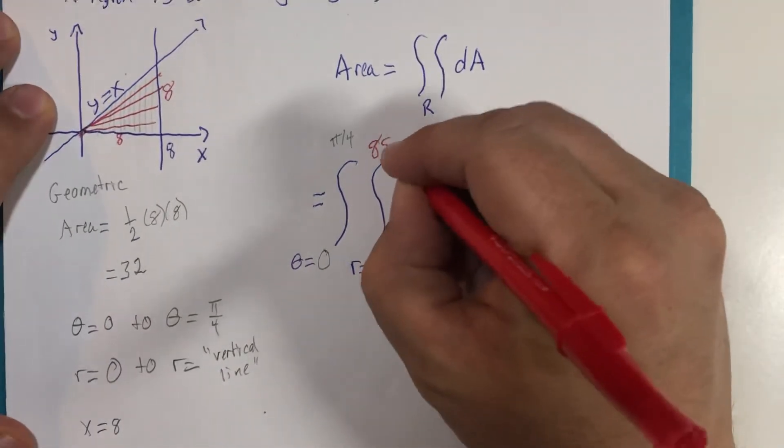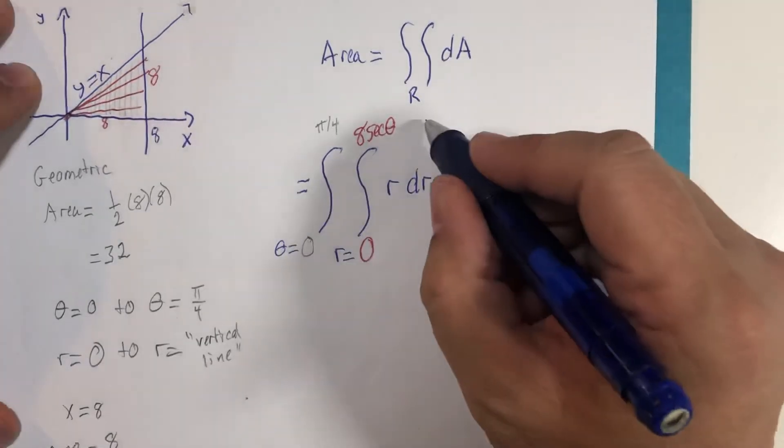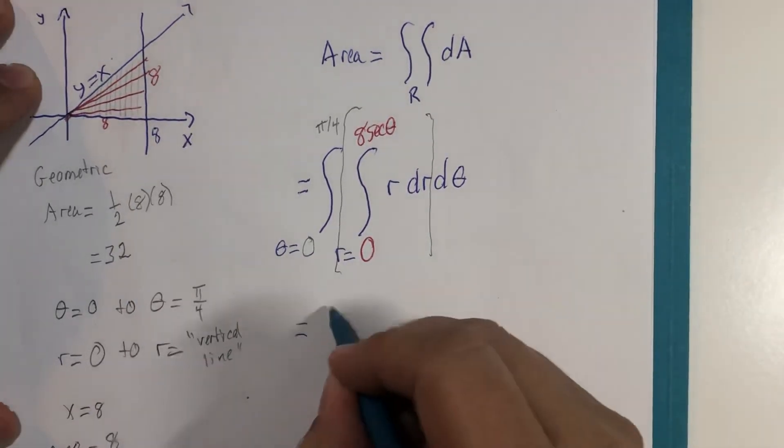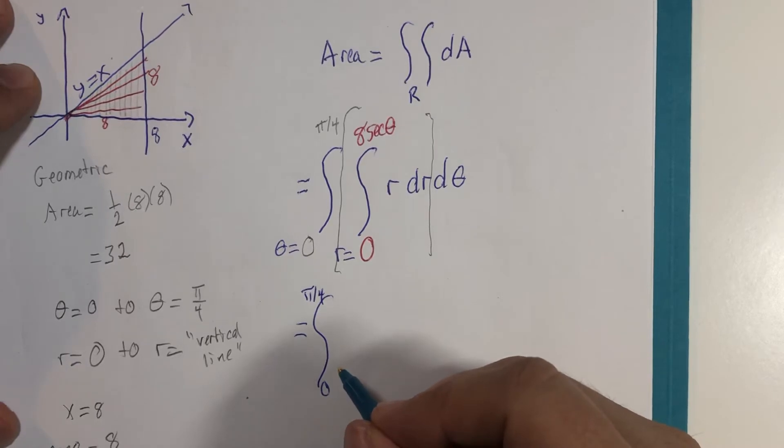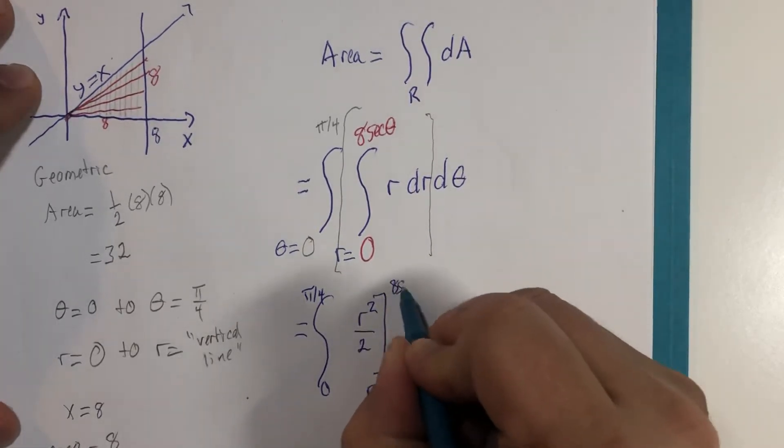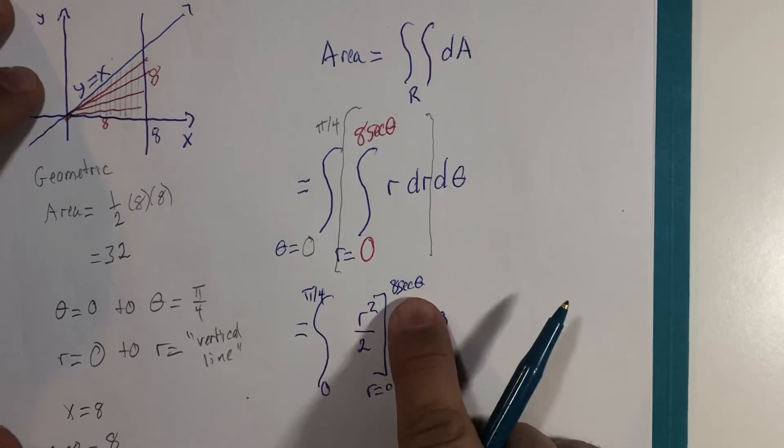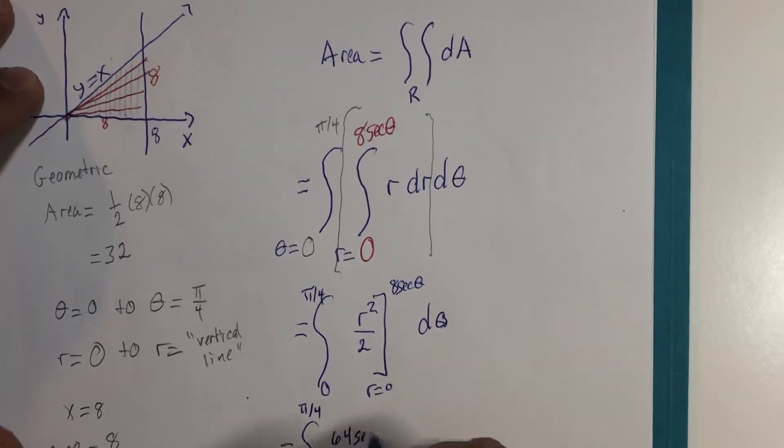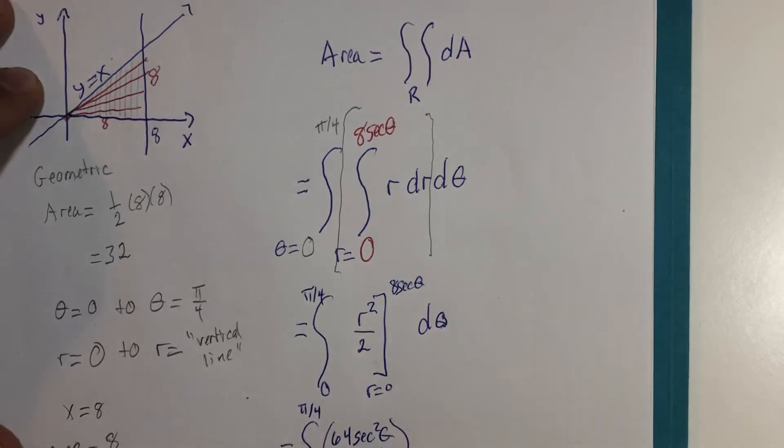All right. 0 to 8 secant of theta. First antiderivative with respect to r. Integral of r is r squared divided by 2. r goes from 0 to 8 secant of theta. If r is 8 secant theta, then that becomes 64 secant squared theta divided by 2. And if r becomes 0, then this fraction becomes 0, leaving us just the one term in here.